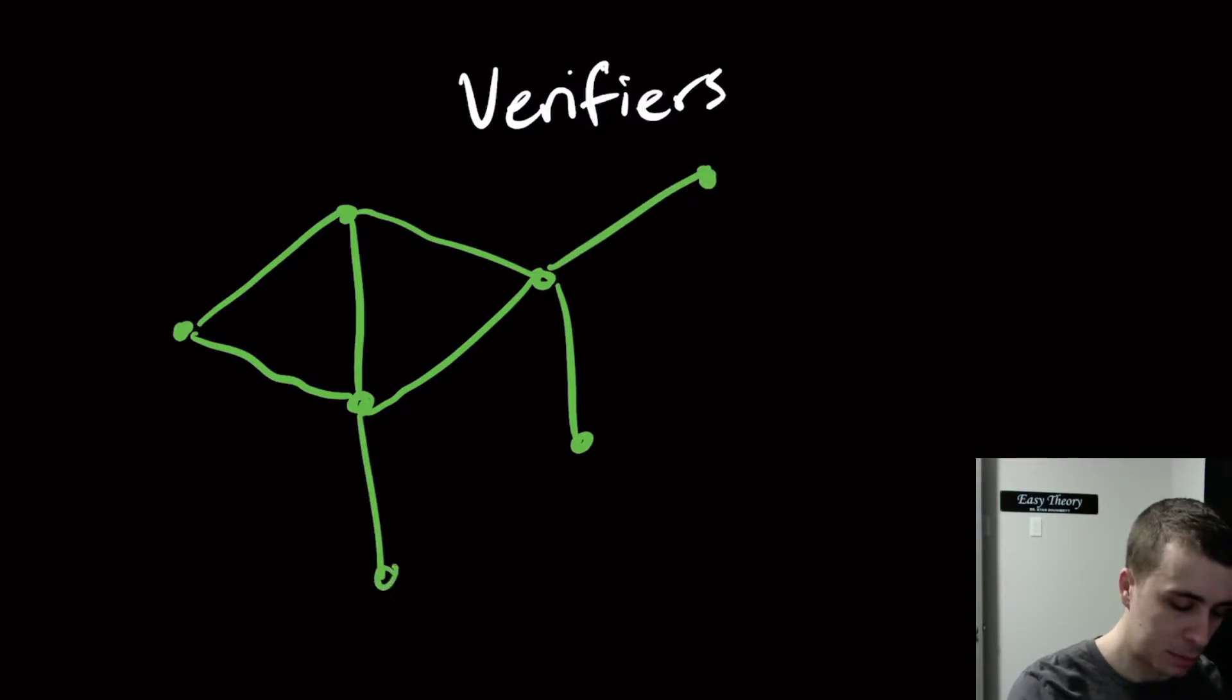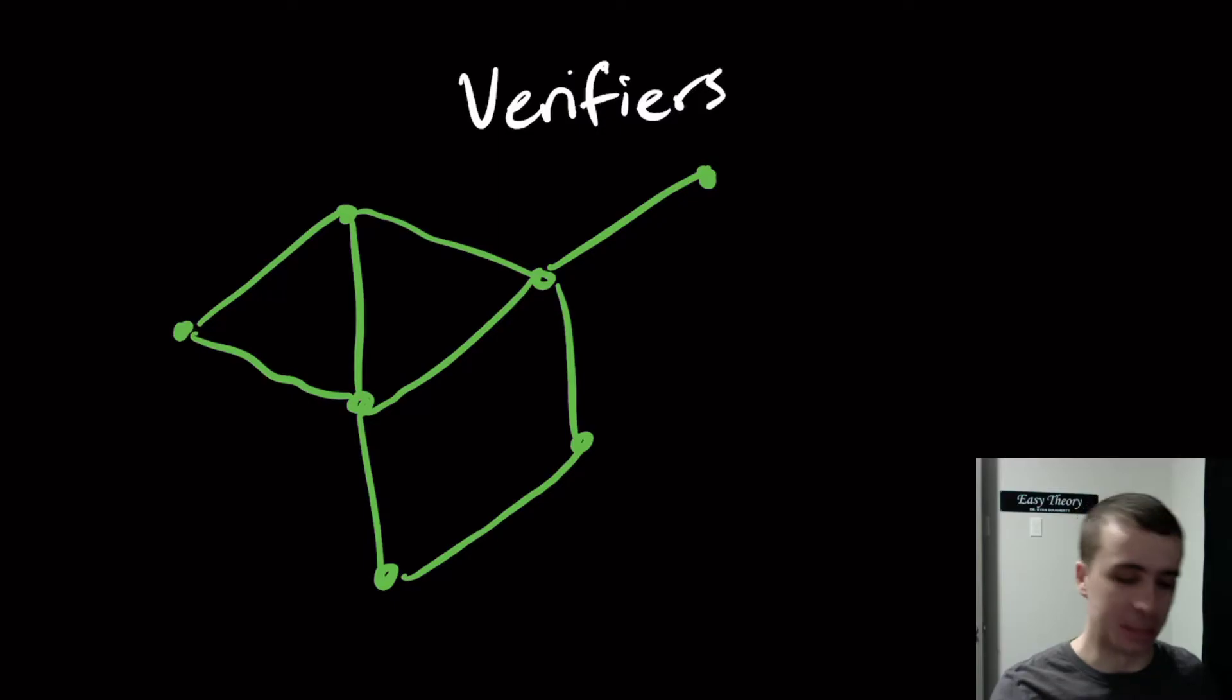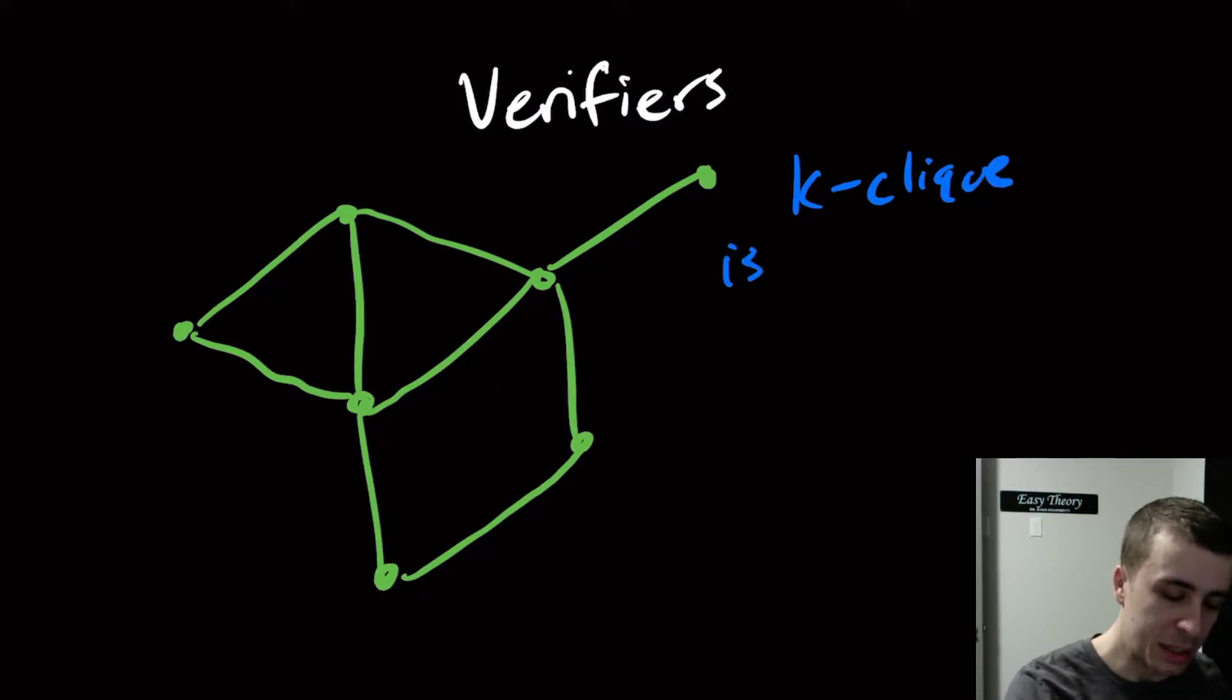If you know what a clique is, you can skip ahead a little bit. Let's say I have a graph right here. A clique, or click if you prefer, is a set of vertices that has every connection present among those vertices. So a k-clique is a set of k vertices.